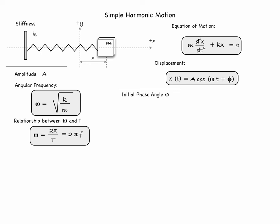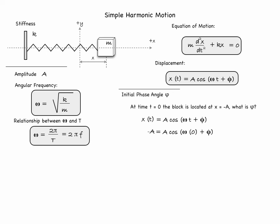Like the amplitude A, the initial phase angle phi cannot be determined without knowing the exact specifics of the problem. Its name indicates we need information about the conditions of the system at some initial time. For example, if at t equals 0 the block is located at minus A, we plug in: minus A equals A cosine(phi), so cosine(phi) equals minus 1, giving phi equals pi. In other words, if the block starts at minus A, we must use phi equals pi in the displacement function.